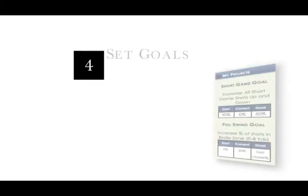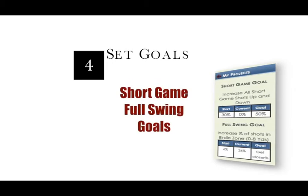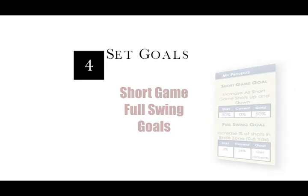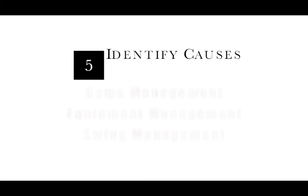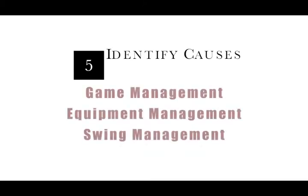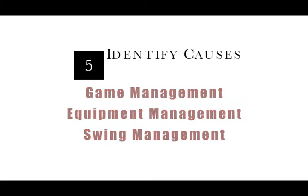You will set a statistical improvement goal for both projects. You will learn that causes of ball performance problems fall into one of three categories: game management, equipment management, and swing management. After identifying the cause, you are ready to implement the solution.